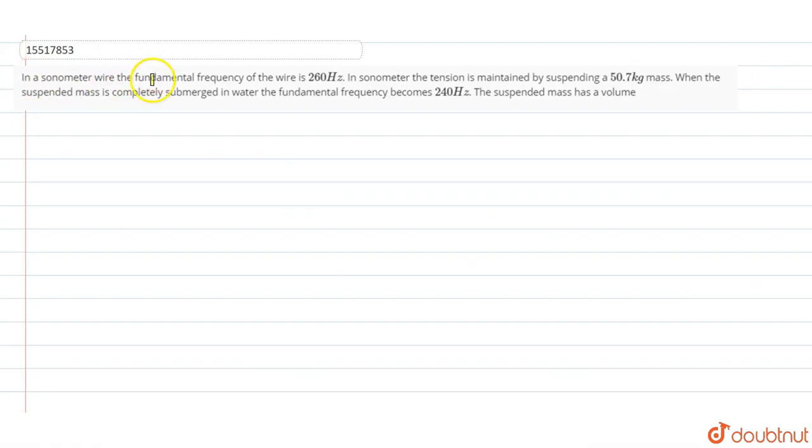A sonometer wire has fundamental frequency 260 hertz with a suspended mass. When the mass is submerged in water, the frequency changes. We need to find the volume of the suspended mass. It is an easy question.